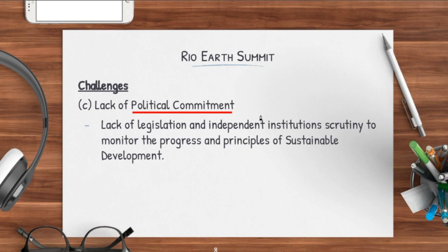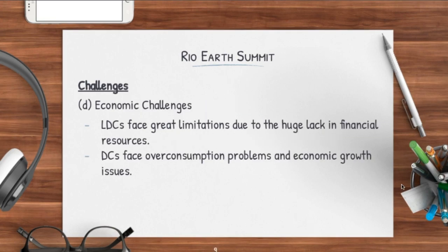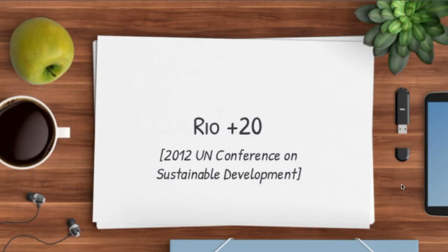Another challenge was a lack of political commitment. Despite Agenda 21 being crafted and pushed out, there was actually a lack of regulations, legislations, and rules to make sure that everyone actually enforced sustainable development practices. This is what ultimately led to Rio+20 coming about later. There were also economic challenges: less developed countries already face great limitations because they don't have sufficient financial resources, while developed countries face overconsumption and economic growth issues. Most developed countries want to focus on economic growth and as a result tend to neglect the environment as a trade-off.